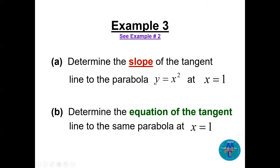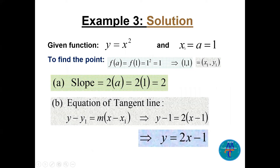Let's determine the slope of the tangent line to y = x² at x = 1, and then find the equation of that tangent line. Since a = 1, f(1) = 1² = 1, giving us the point (1, 1). The slope is 2a = 2(1) = 2. Using y − y₁ = m(x − x₁), which we saw in Calculus 1 Lecture 1: y − 1 = 2(x − 1), which simplifies to y = 2x − 1.